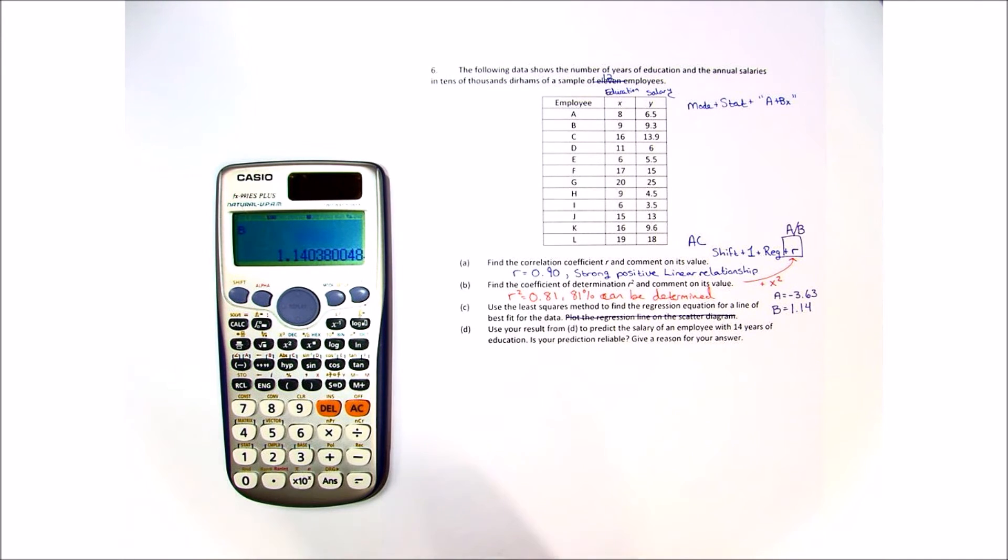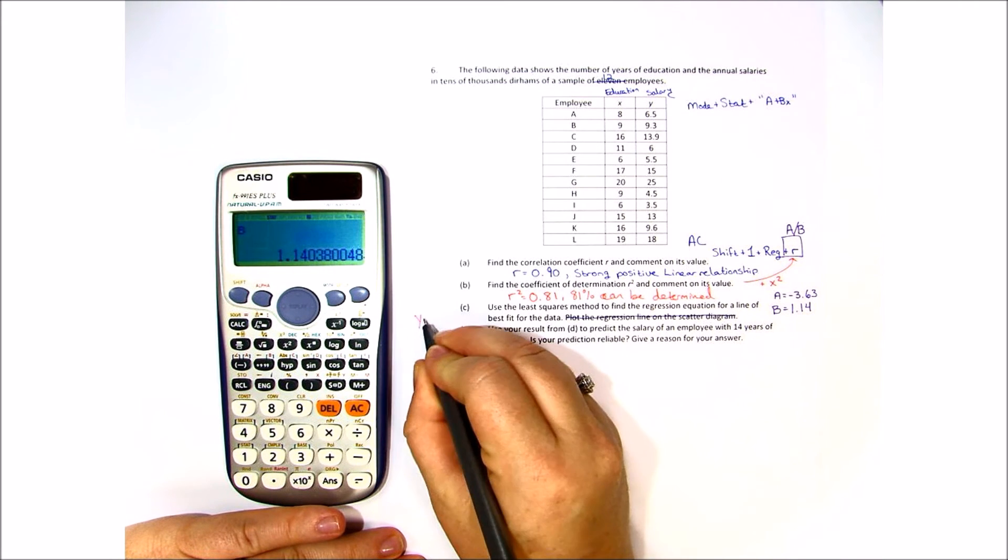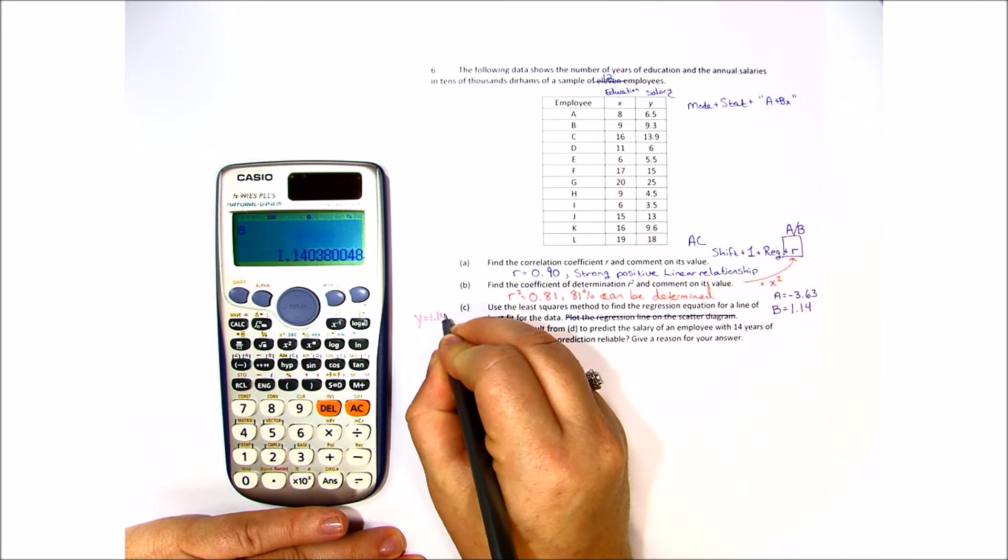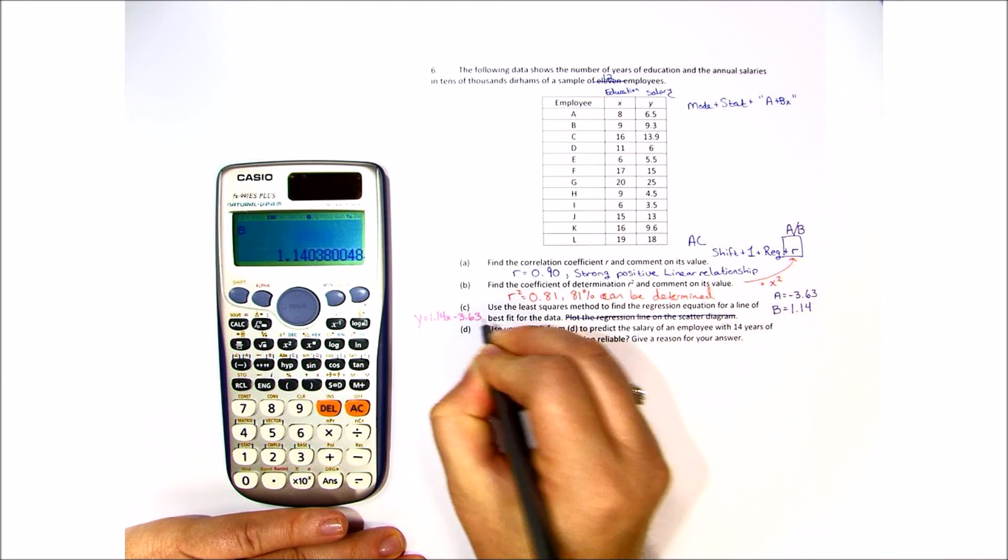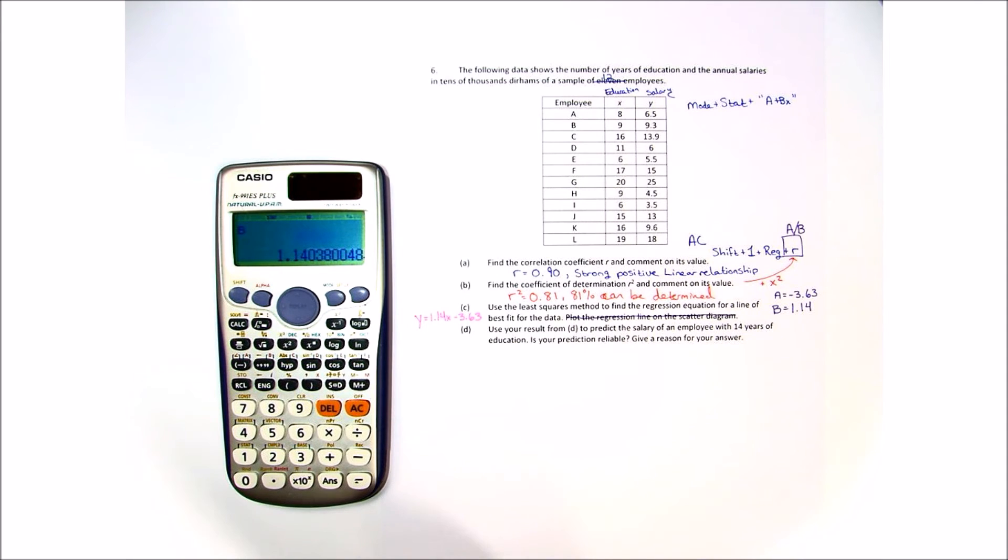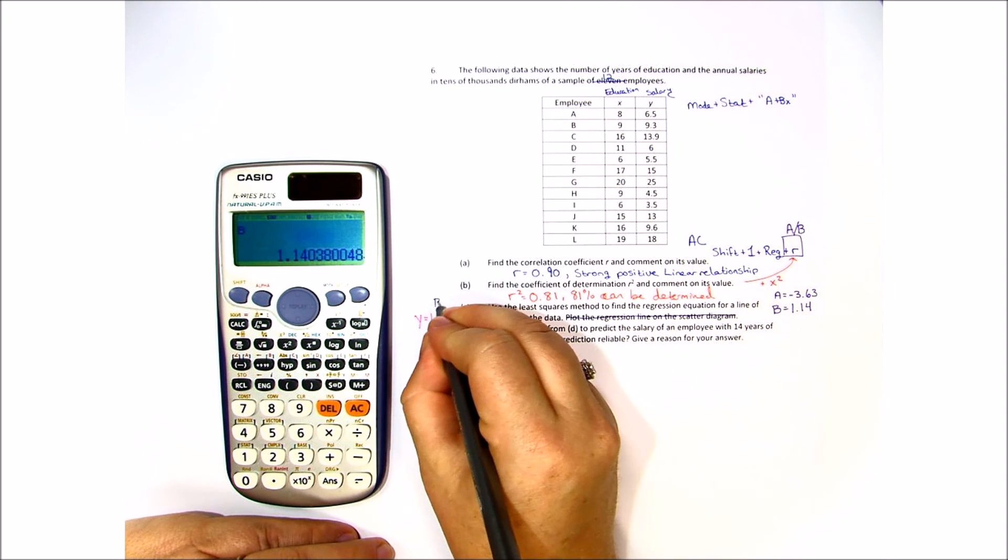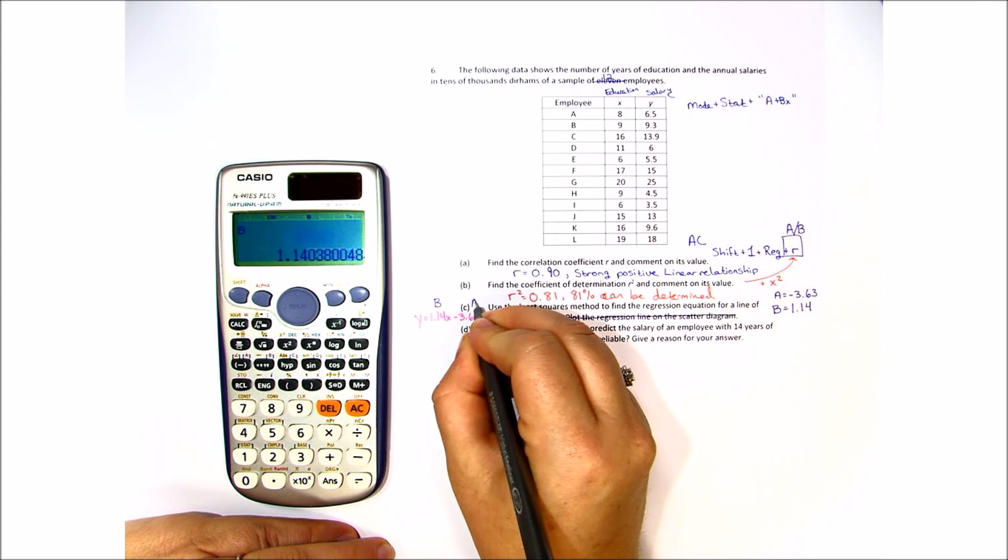In other words, the line of best fit is y equals 1.14x minus 3.63. In other words, it's going to be b times x plus a.